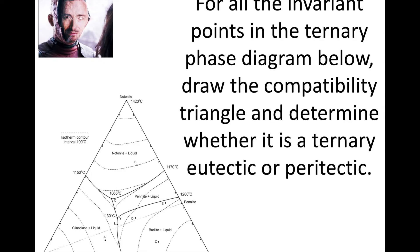Now we have a new example with a different phase diagram. I want you to identify all the invariant points, draw the compatibility triangles, and determine whether each is a eutectic or peritectic reaction. Take a few minutes, pause the video, and then we'll work through it together.